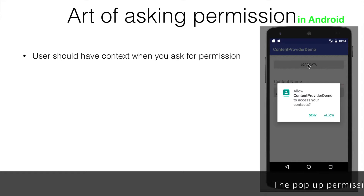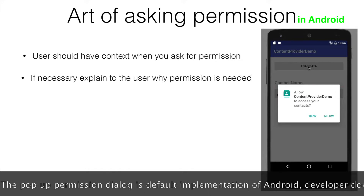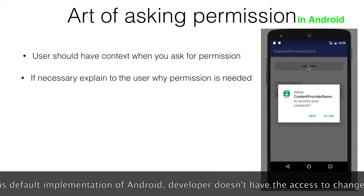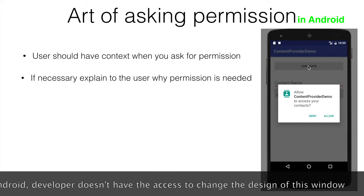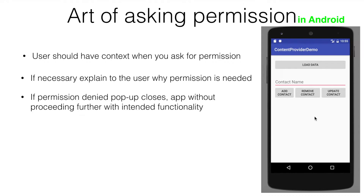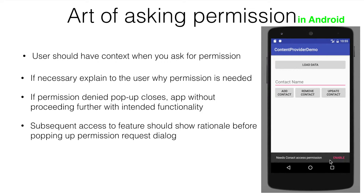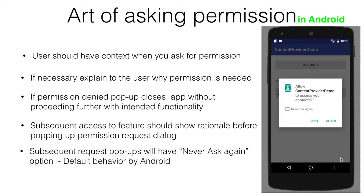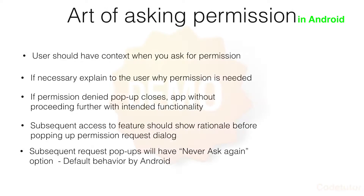You can observe that the pop-up window doesn't tell the user why you need this particular permission — it just asks to grant it. So sometimes it is better to show the user some reasoning why you need this permission. The user can click allow or deny. If the user denies, the window closes and no further function executes. If they click load data again, it will show a rationale. On a second denial, the user will see a 'never ask again' option. If they click 'never ask again' and deny, this pop-up will never occur again.